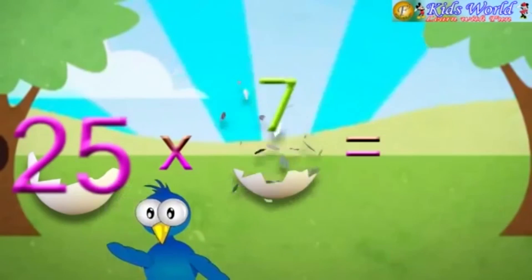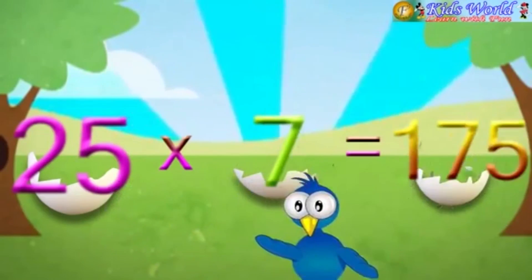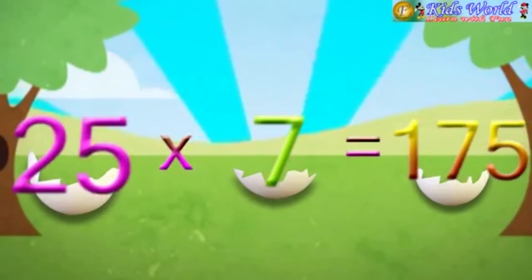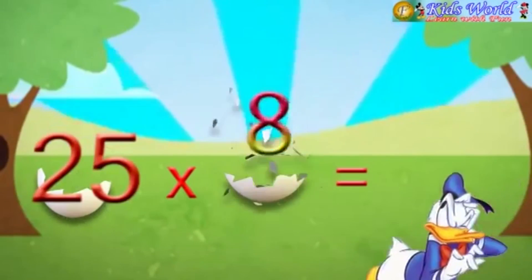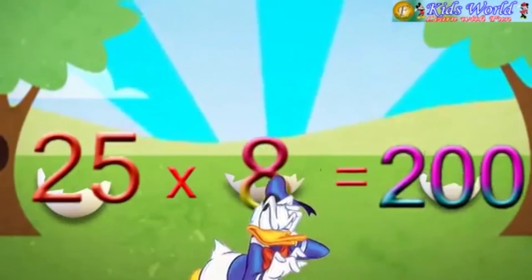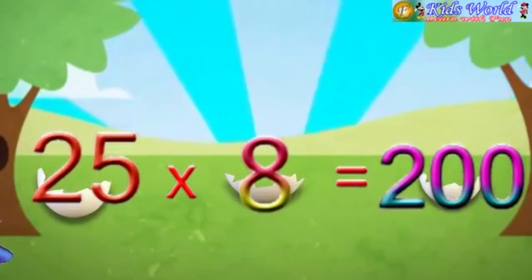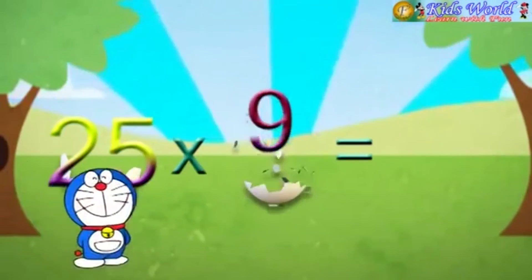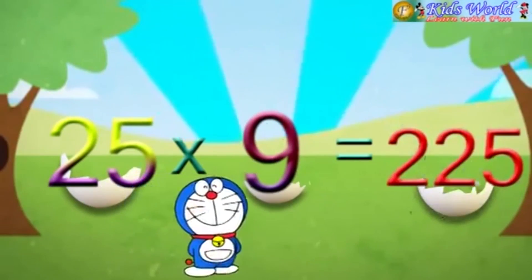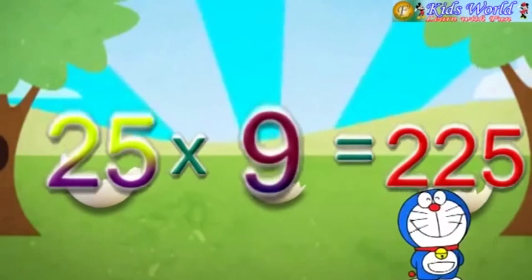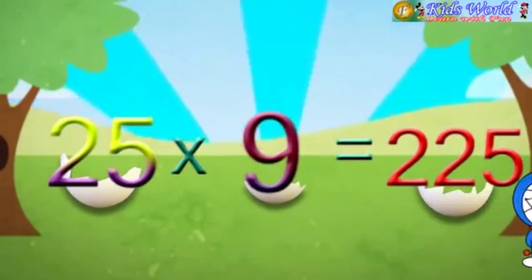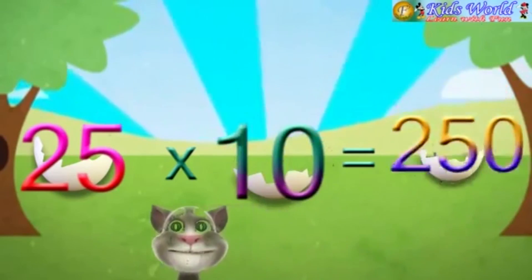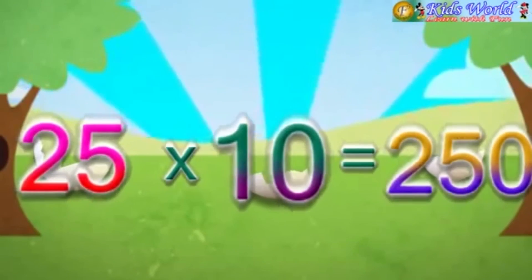25 into 7 is equal to 175. 25 into 8 is equal to 200. 25 into 9 is equal to 225. 25 into 10 is equal to 250.